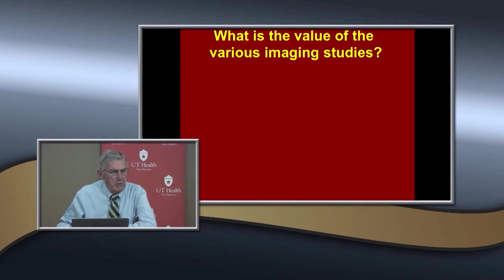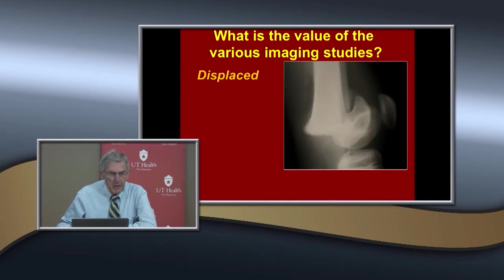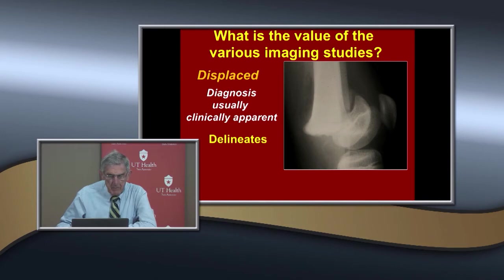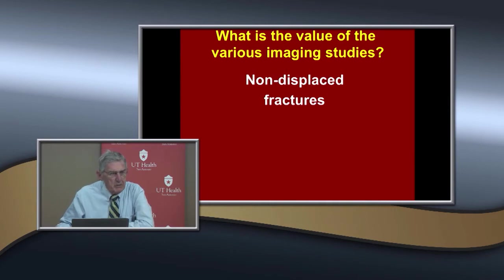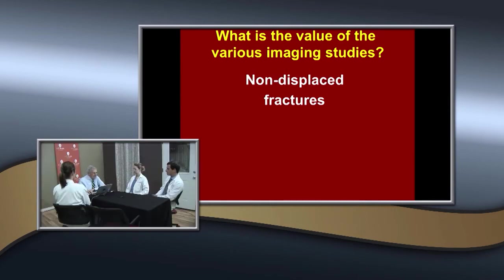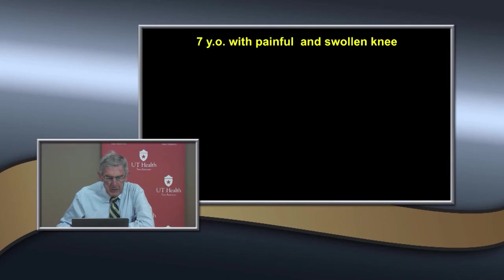Order AP and lateral x-rays of the knee first. If displaced, the diagnosis is usually clinically apparent and x-rays confirm the displacement pattern and Salter-Harris type. Here's a seven-year-old with a painful, swollen knee. What do you see on the x-rays? Not very much — no displacement, no fracture seen.